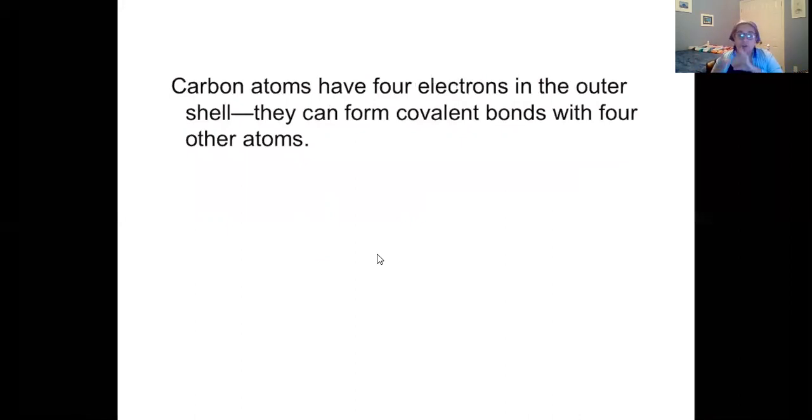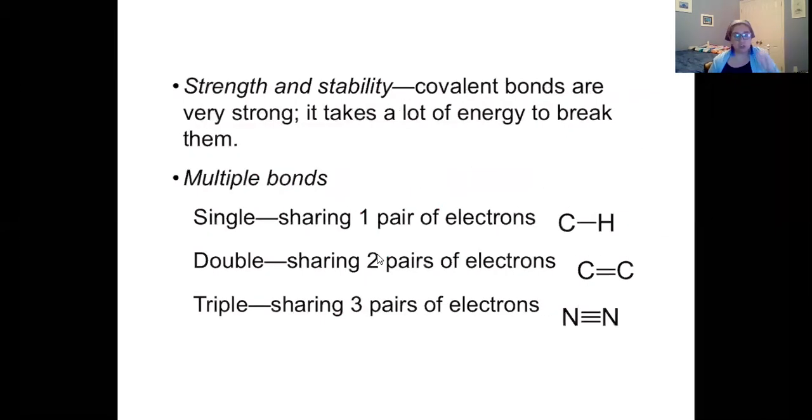Carbon will always have four electrons in its outer shell. So whenever we draw carbon, you will see it drawn like this with four different spaces. Usually molecules will fill those spaces. But there's something unique about carbon. Carbon is able to form multiple bonds. What you're seeing here is that this carbon and hydrogen, that line right there represents a single covalent bond. Covalent bonds are pretty strong. You have to use energy to break them. There's a sharing of one pair of electrons. And we draw that with a single line. That means that between the carbon and the hydrogen, there are electrons being shared.